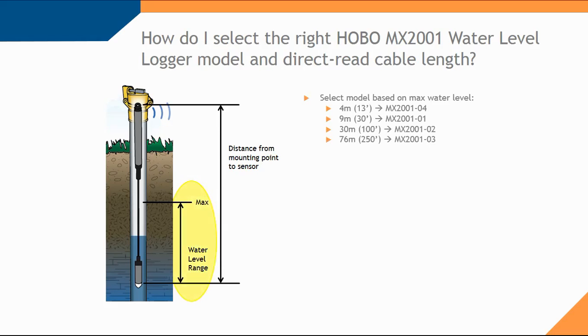Here we have four different models to choose from depending on the range that we expect to see. Keep in mind that one thing that becomes confusing sometimes is our well may be very deep, however our water level change may be very small.